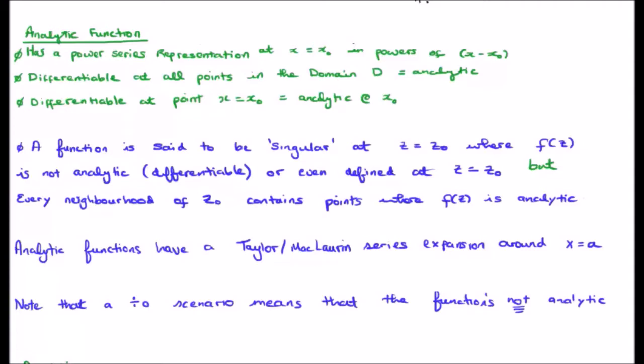A function is referred to as singular when f(z) is not analytic, not differentiable, or cannot even be defined at z equals z_0. But in the neighborhood of z_0 it contains points which are analytic. So we may have a singular point at a particular value for z but in the neighborhood around it the function is analytic. Analytic functions have Taylor or Maclaurin series expansions around x equals a. The difference between a Taylor and Maclaurin series is that for the Maclaurin series a equals zero.